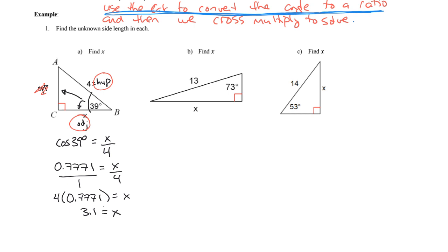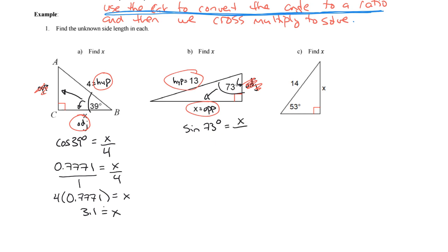For the next question, the angle is 73°. The hypotenuse is 13. The x I'm looking for is opposite the 73°, and the remaining side is adjacent. I know the hypotenuse and I'm looking for the opposite — I don't care about the adjacent. The trig function relating opposite and hypotenuse is sine, so sine of 73° equals x over 13.